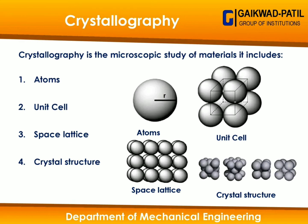The next component is space lattice. Space lattice is a combination of a number of unit cells, and these unit cells form a complete chain of atoms. That complete chain of atoms will further form into a crystalline structure. The crystalline structure can be visualized in the presentation — body centered cubic, hexagonal close pack, simple cubic, and face centered cubic crystal structures. So: atom is the most basic component, unit cell is formed from a number of atoms, space lattice is formed from a number of unit cells arranged systematically, and from the space lattice different crystal structures form.